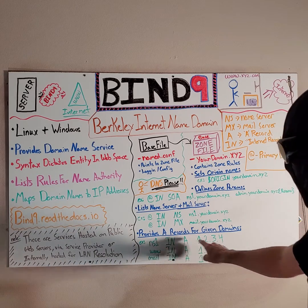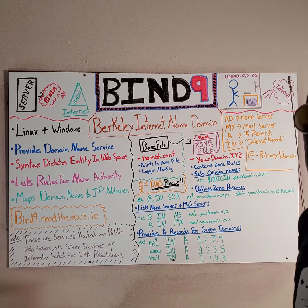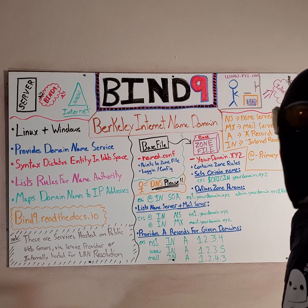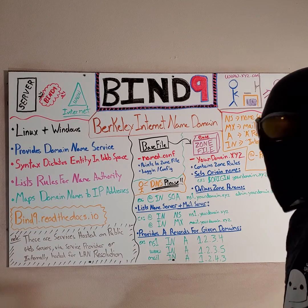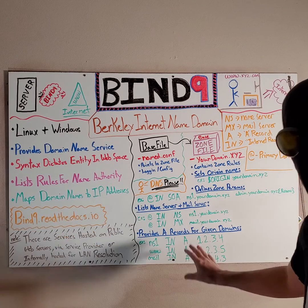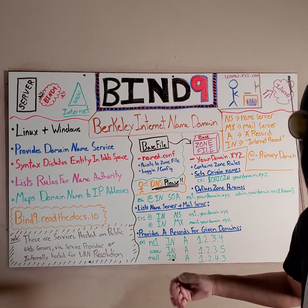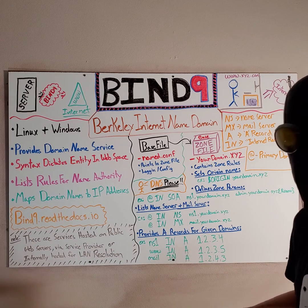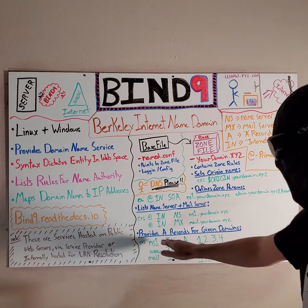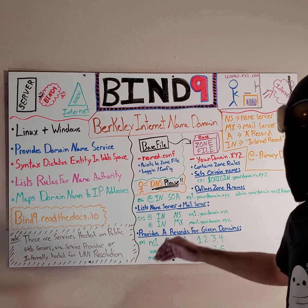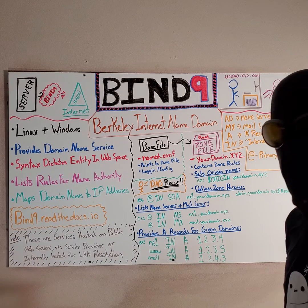Each one of these is on a different IP address. And that is why it's so important to have these rules and why Bind9 is so important — because it actually allows you to have multiple different physical locations or physical IP addresses, i.e., servers, virtual servers, whatever, running or accessible for each one of these different services.